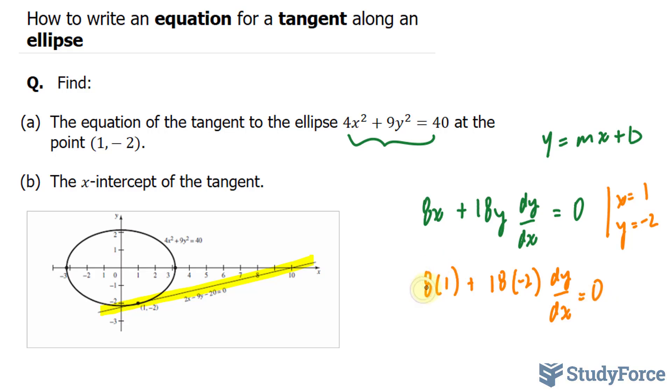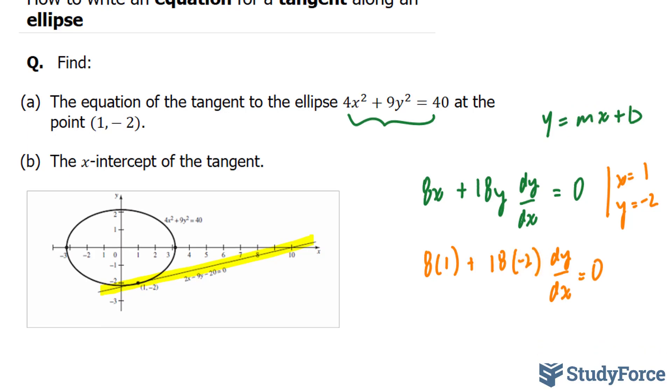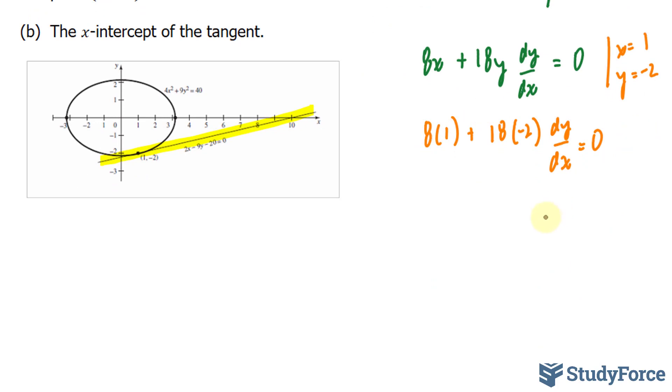Bringing this 8 to the opposite side because we want to isolate for dy over dx. If we isolate for dy over dx, we've actually found m. So bringing this 8 over gives us negative 8, leaving us with dy over dx of the product of these two numbers, which is negative 36.